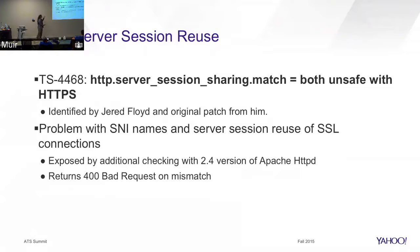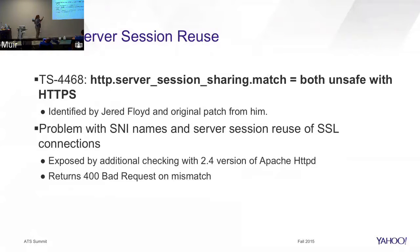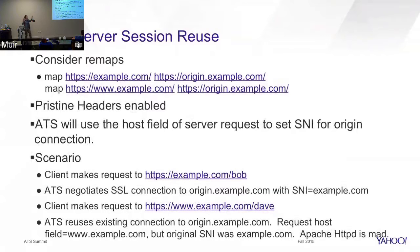If you look at this bug, there is a very long conversation about SNI and server session reuse. We like to reuse connections to the server — it makes things more efficient, particularly for SSL since the handshake is expensive. At Yahoo, we run with session sharing match 'both', which means it has to match both the IP and the FQDN of the server. In pre-7.0, that's what it would do. However, it didn't really consider the SNI names, and this is primarily an issue with pristine hosts. Newer versions of Apache are now a bit more restrictive about that.